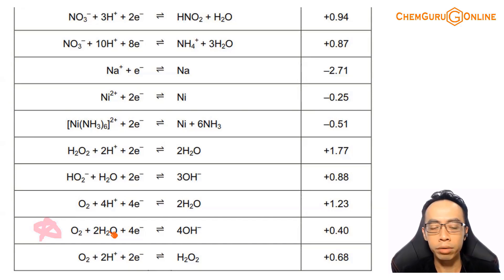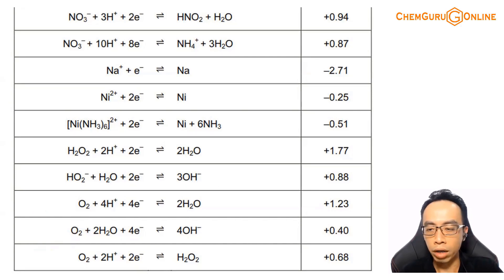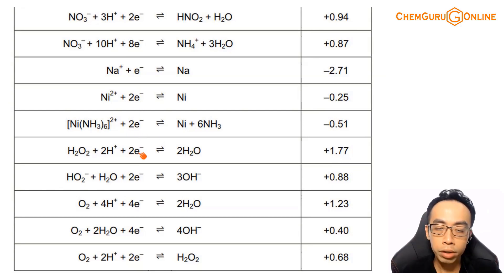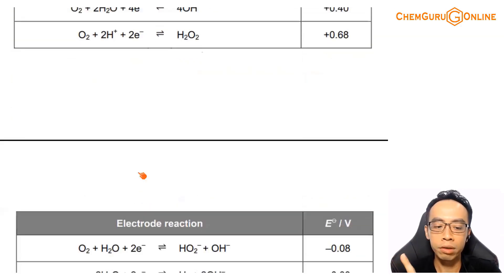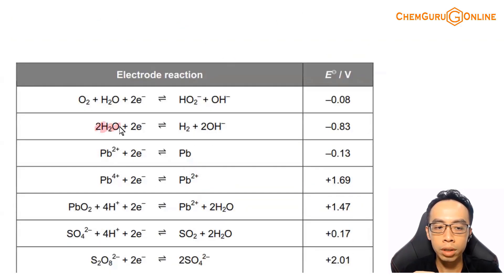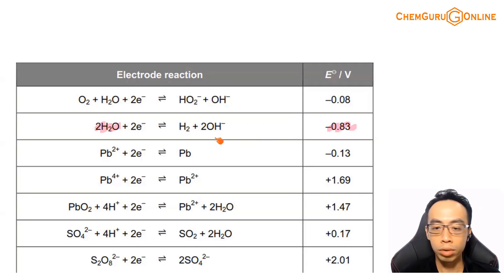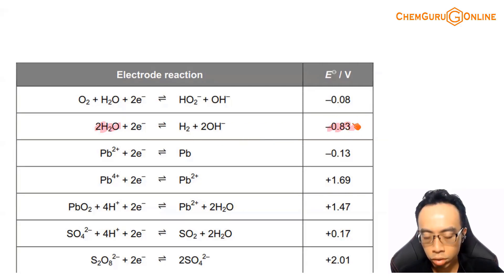The half equation we want for the reduction of water is one where only water is present on the left-hand side — nobody else. There is only one such half equation: 2H2O + 2e⁻ → H2 + 2OH⁻, at −0.83V. This is the one we use. Copy this whole thing down and exit the data booklet.